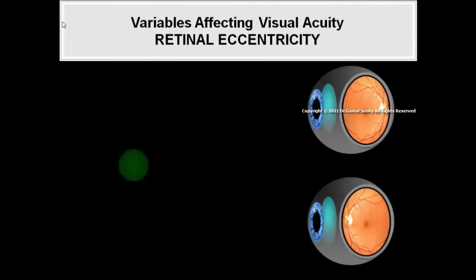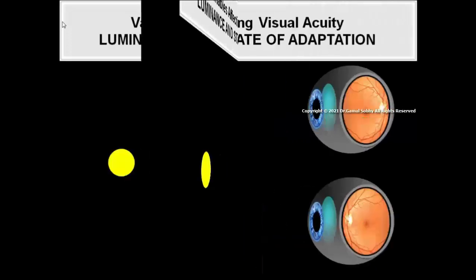The visual acuity depends on the location of the retinal stimulus on the retina and decreases sharply with an increase in distance of the image of an object from the center of the fovea. 4.